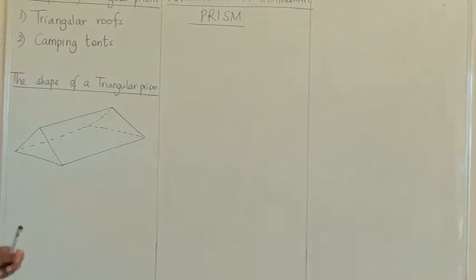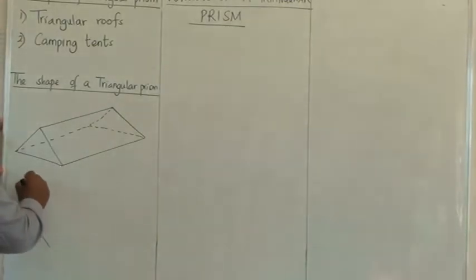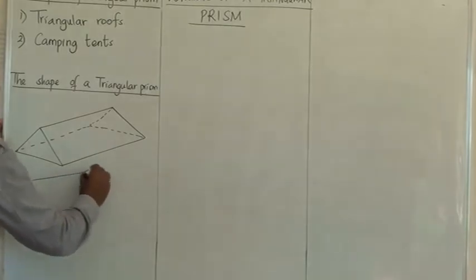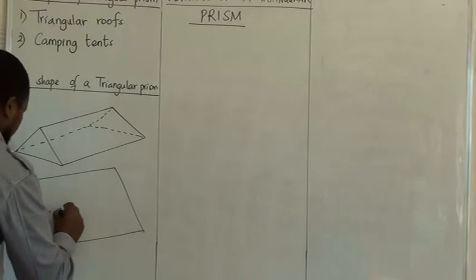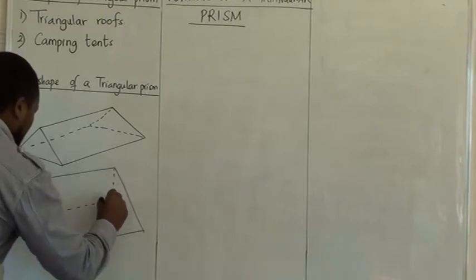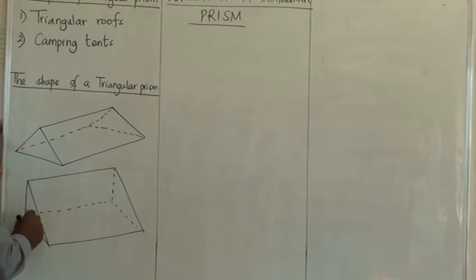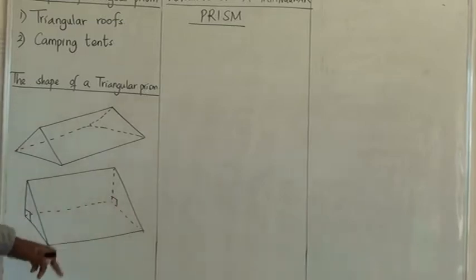It could be of this shape. And also, you could have it having a right angle triangle. This also is also a triangular prism. Therefore, you can have these shapes.